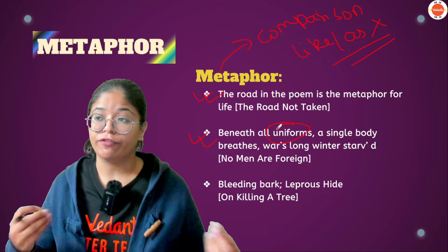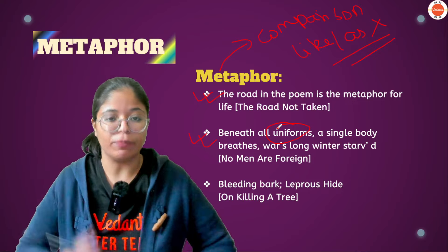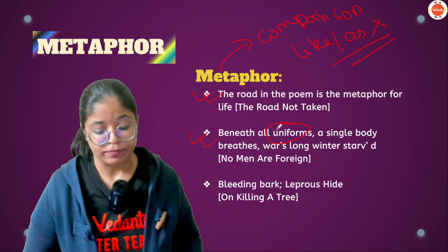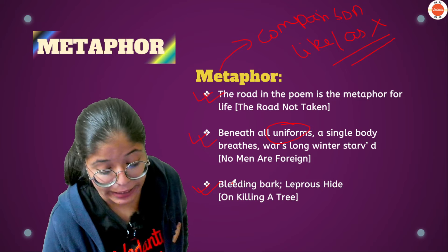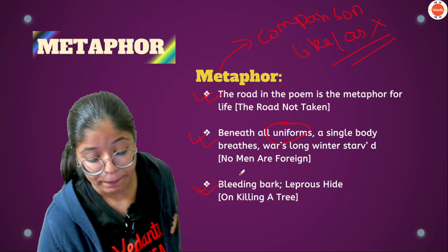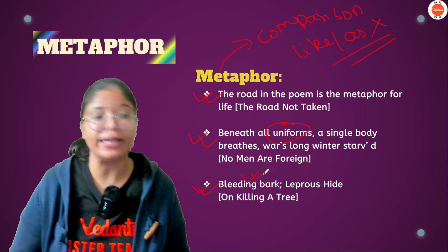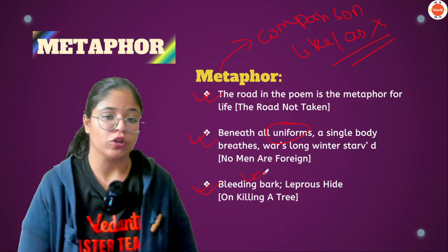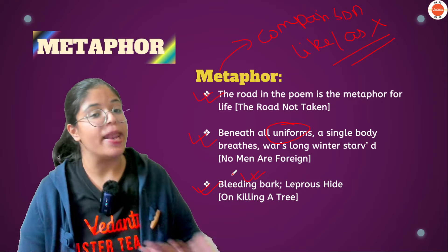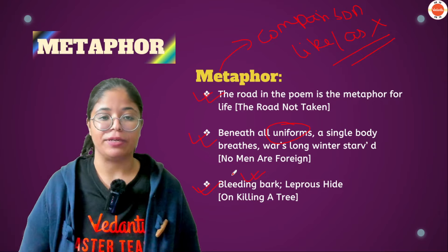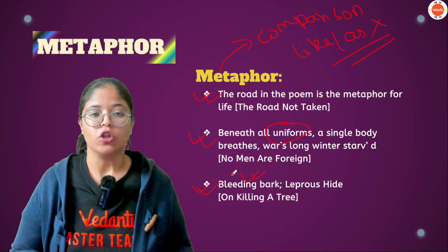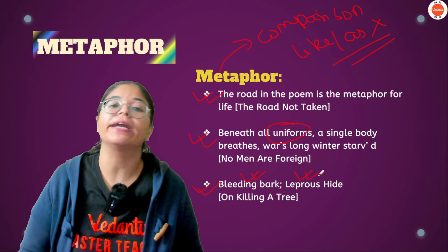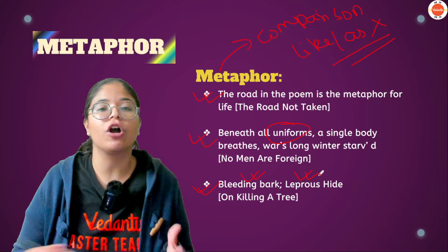When we use the word 'uniform,' it basically acts as a comparison for all the different ethnicities or different cultures — different uniforms representing different cultures. So here we have also used metaphor. Then, in 'On Killing a Tree,' when we use the phrase 'bleeding bark,' the bleeding is a comparison — when you cut the plant, the sap comes out, and we compare that directly to bleeding. Similarly, 'leprous hide' — leprosy is a disease in human beings causing discoloration of the body, and we compare it directly to the bark of a tree. So in all these cases, we use metaphor, where we compare two things without using 'like' or 'as'.